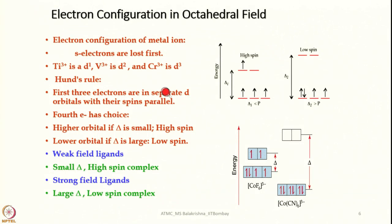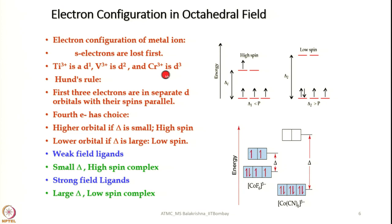Now let us look into electronic configurations in an octahedral field. When we ionize metal atoms to generate cationic metal ions, first the s electrons are lost — the two electrons in the (n+1)s orbital — and if further oxidation takes place, electrons are then removed sequentially from the inner d orbitals. For example, titanium(III) has a 3d¹ 4s² configuration leaving one d electron — it is a d¹ system. Vanadium(III) with 3d² 4s² loses 3 electrons to give a d² system. Chromium(III) has a 3d³ 4s² configuration and removing 3 electrons leaves a d³ system.